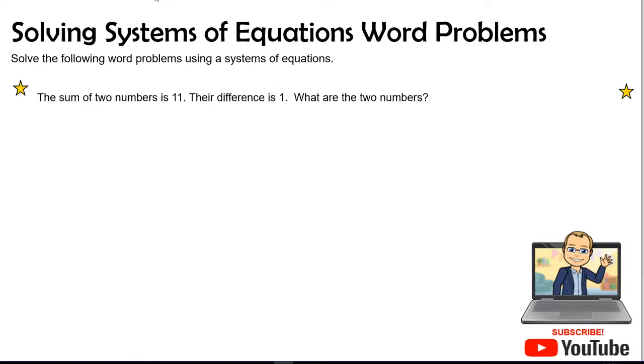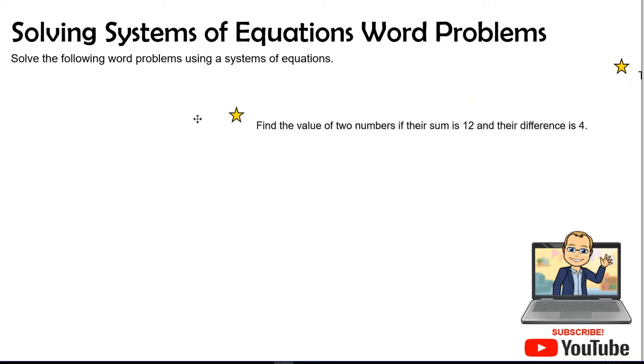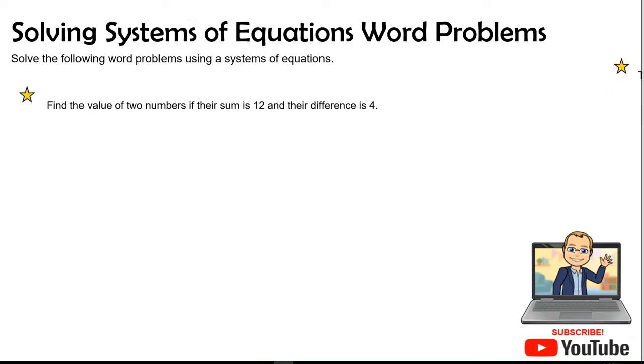Here we go. Now it says, find the value of two numbers if their sum is 12 and their difference is four. Okay. So let's go ahead and use our let statement again. We're going to let X equal the first number. And we're going to let Y equal the second number.